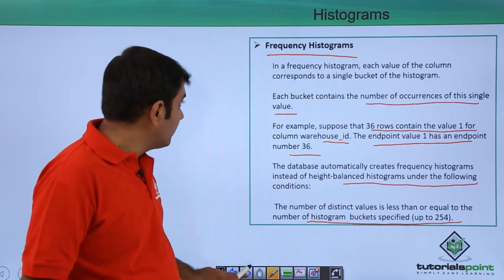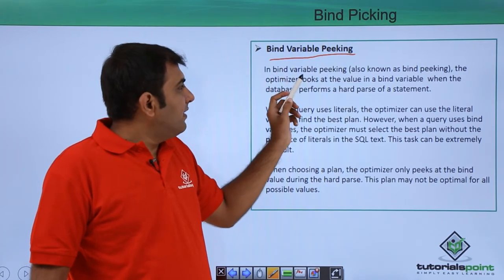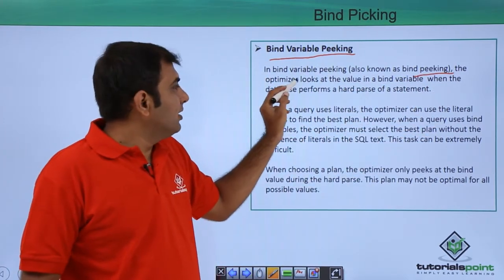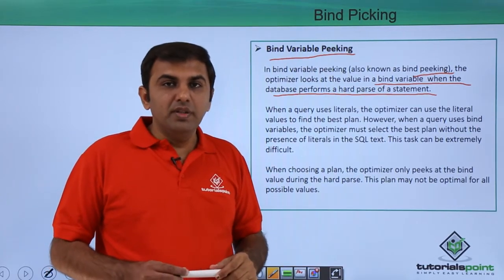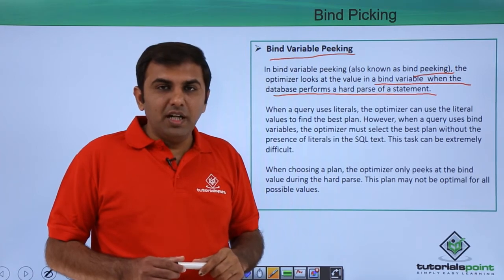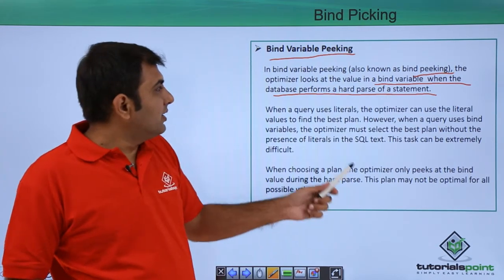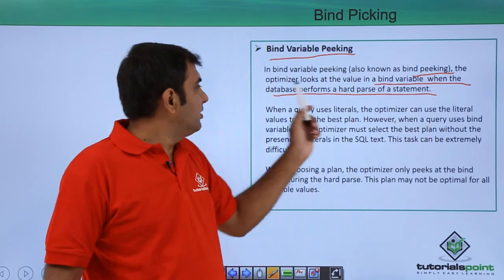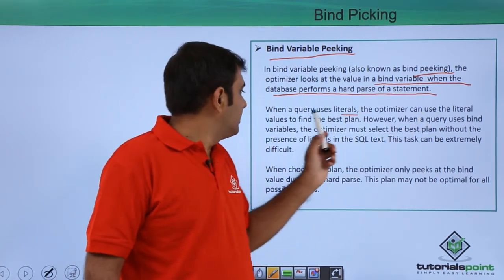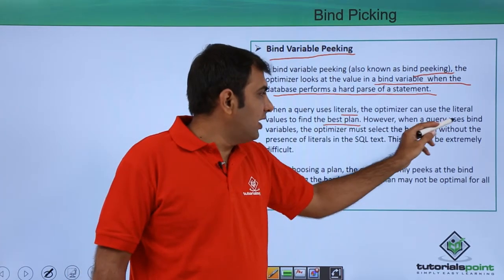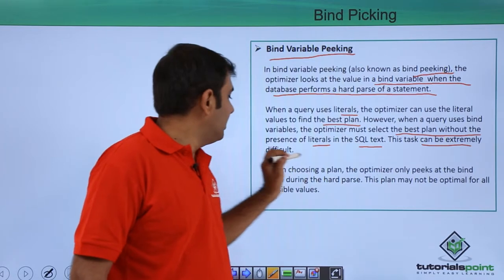Next is bind peeking. In bind variable peeking, also called bind peeking, the optimizer looks at the value in the bind variable when the database performs a hard parse of the statement - meaning when the execution plan is not available in the library cache. When a query uses literals, the optimizer can use the literal values to find the best plan. However, when the query uses bind variables, the optimizer must select the best plan without the presence of literals in the SQL, which can be extremely difficult.